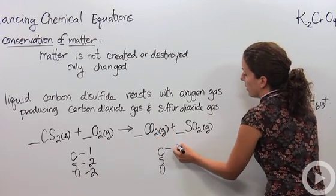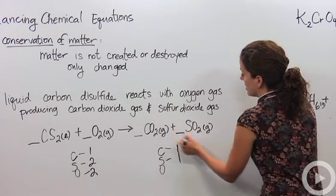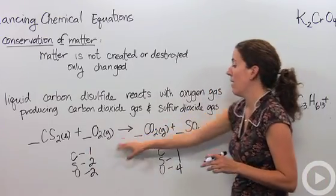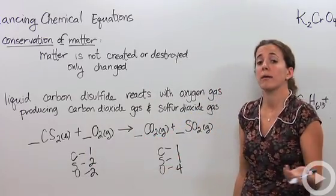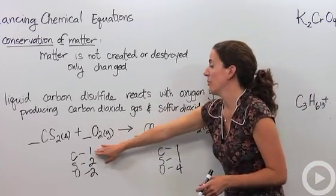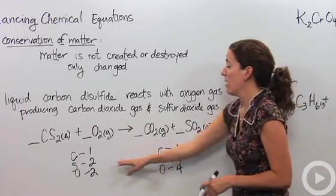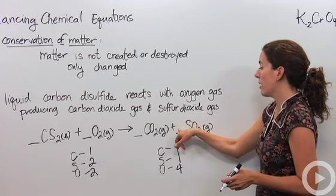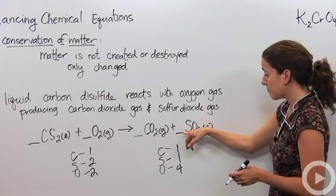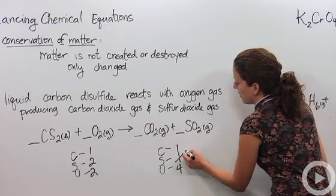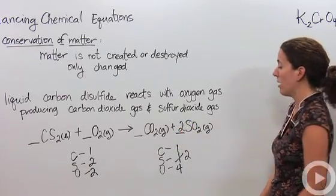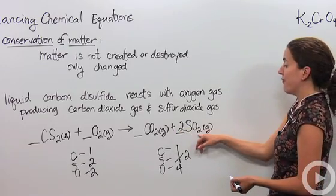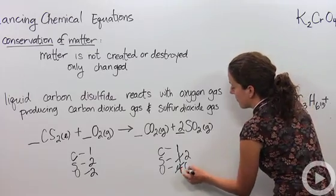On the product side we have one carbon, one sulfur, and two plus two is four oxygens. Before balancing, we notice an uneven number of elements on either side. Carbons are balanced — one on each side. Looking at sulfur, we have two on the reactant side and one on the product side, so we need to change that. We put a coefficient in front of the compound, placing a two before the sulfur dioxide. That gives us two sulfur atoms, but also changes the oxygen to four plus two, which is six.